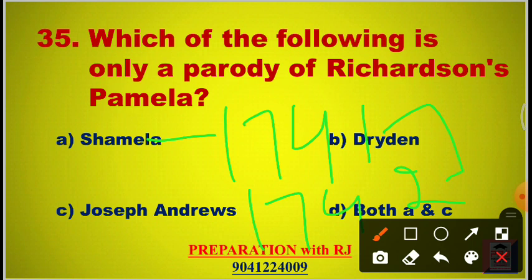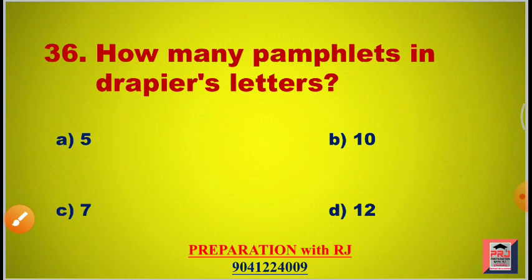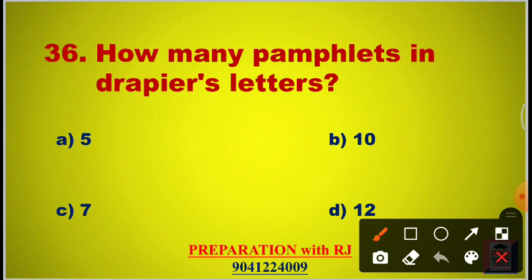Question 36: How many pamphlets are in Drapier's Letters? Options are 5, 7, 10, 12. The answer is C, 7. This work is by Swift.